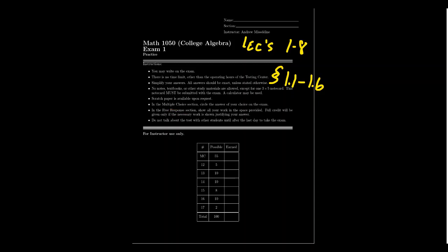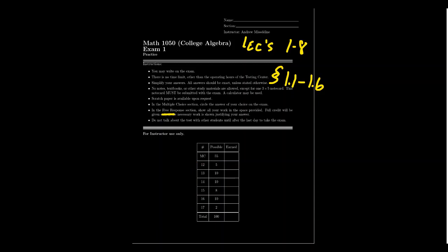The second section is the free response section, consisting of questions 12 through 16. These are mostly worth 10 points each, though question 15 is 8 points and question 12 is 5 points — similar to multiple choice. There's also a final item worth 2 points for notes, which is pass-fail. Specific requirements for that may change from semester to semester, so ask your instructor.